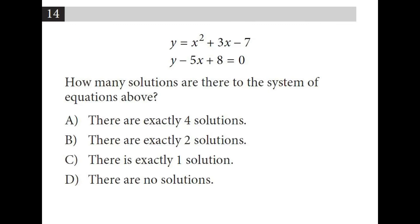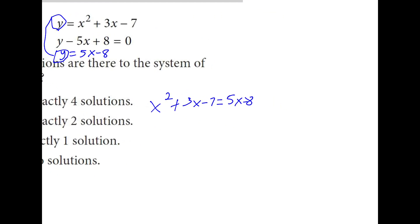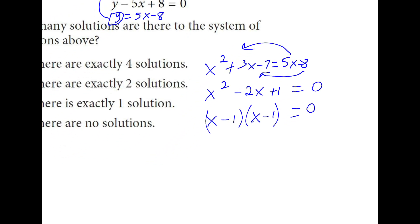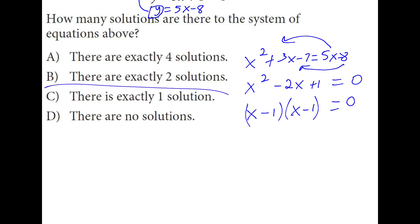So I'm going to solve this second equation for y because that's going to be 5x minus 8. So then I can say that x squared plus 3x minus 7 is equal to 5x minus 8 because both of these are y equal statements. So they must be equal to each other. I'm going to solve this for 0. So this can be minus 2x plus 1 is equal to 0 because I'm moving the 5x and the 8 over. What are factors of 1 that add up to negative 2? That's going to be x minus 1 and x minus 1. Since these two factors are the same, there's exactly one solution.